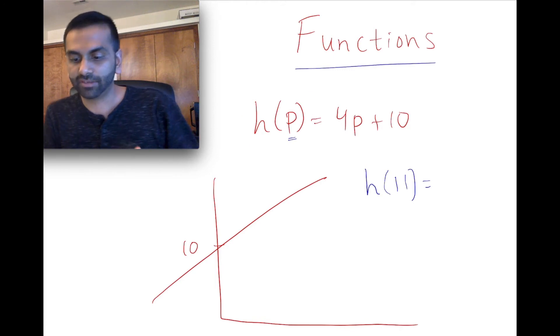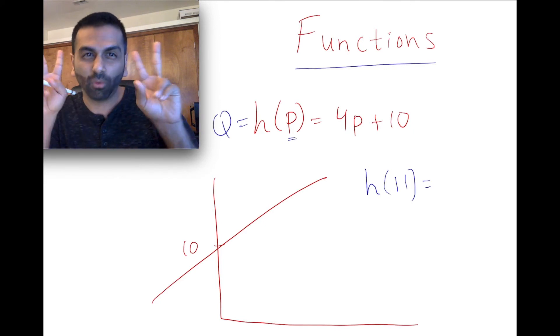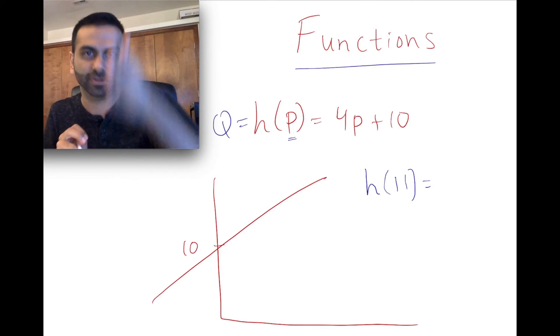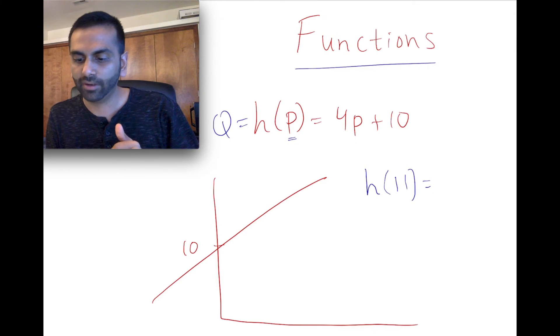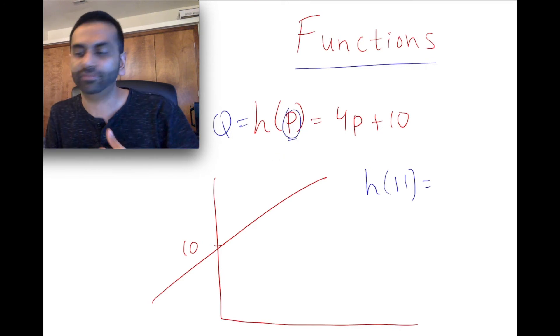So sometimes they'll have something like q equals h of p. That just means that's your y variable, your output variable. So again, whatever that function equals is your output variable. Whatever is on the inside is your input variable.